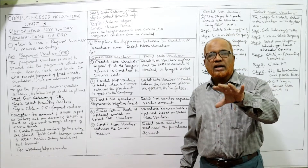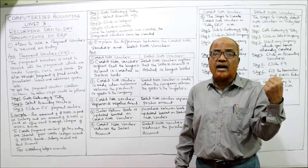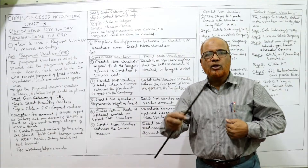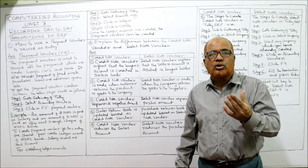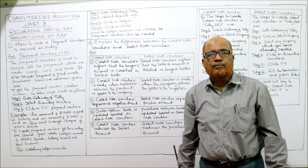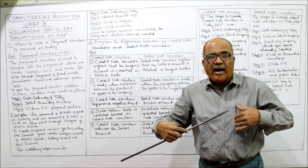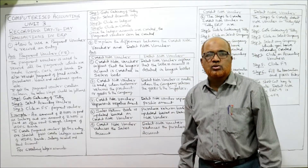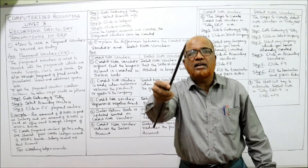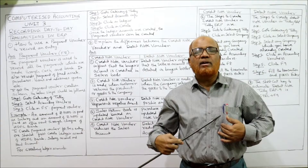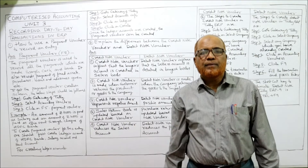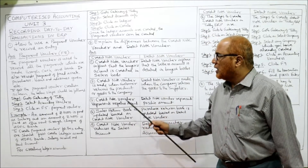The debit note voucher indicates that the supplier's account is debited in the buyer's books. When the buyer returns goods, the buyer makes a debit note indicating that the supplier's account is debited in the buyer's books. So the seller makes a credit note and the buyer makes a debit note.